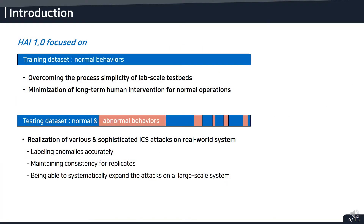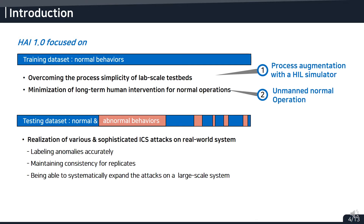To create the HAI dataset, we tried to solve three problems. For generating the training dataset, the first problem is how to overcome the simple process of lab-scale testbeds. For a richer dataset, we made a complex process by combining a real-world testbed using a HIL simulator. The second problem is the challenge for humans to control long-term operations, so we made an automation tool for normal operation. When generating the testing dataset, manual attacks have many limitations in implementing various sophisticated attacks, labeling the anomalies, and expanding the attacks on a large-scale system.